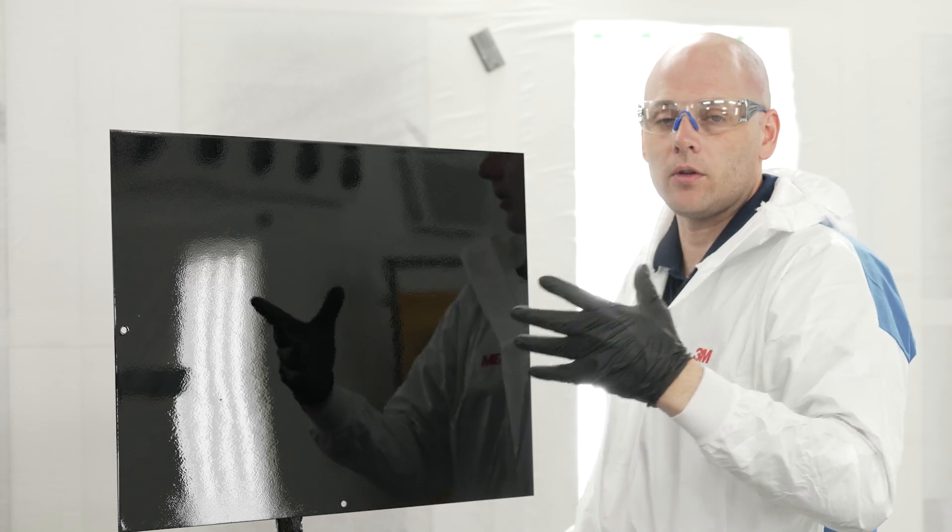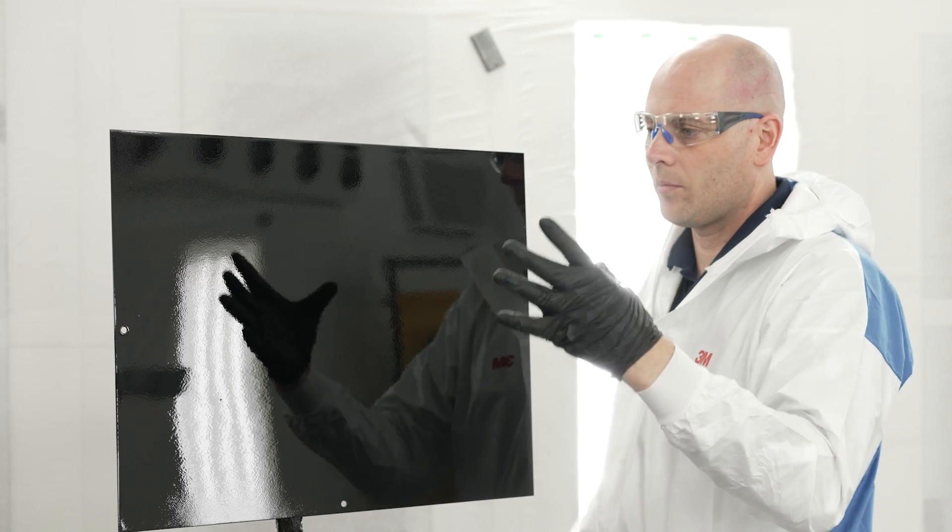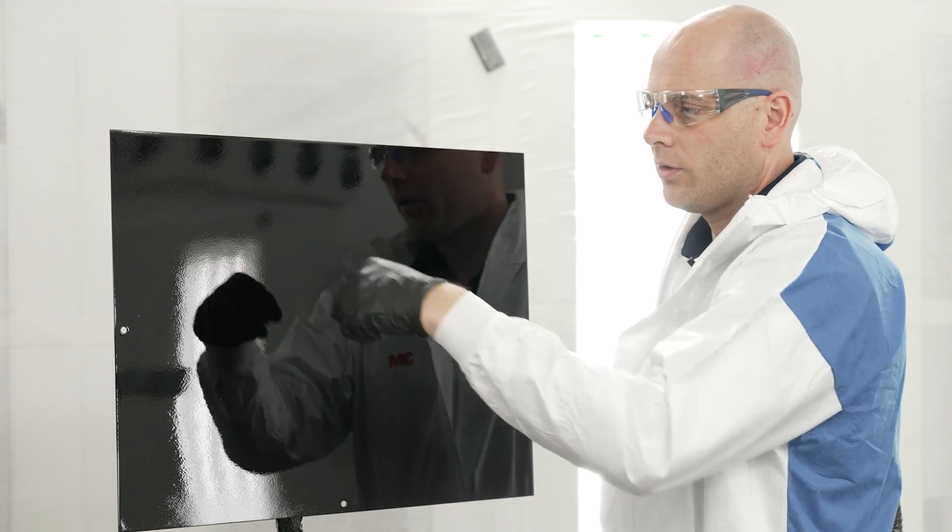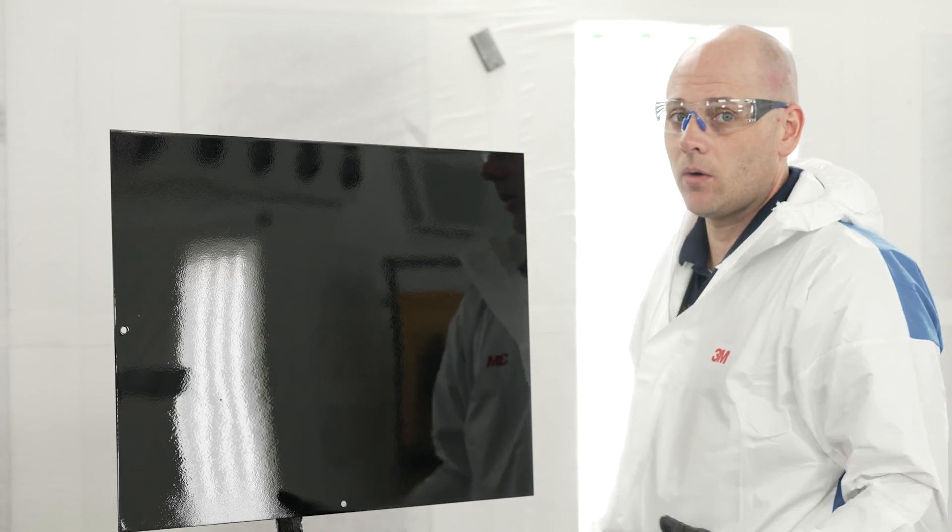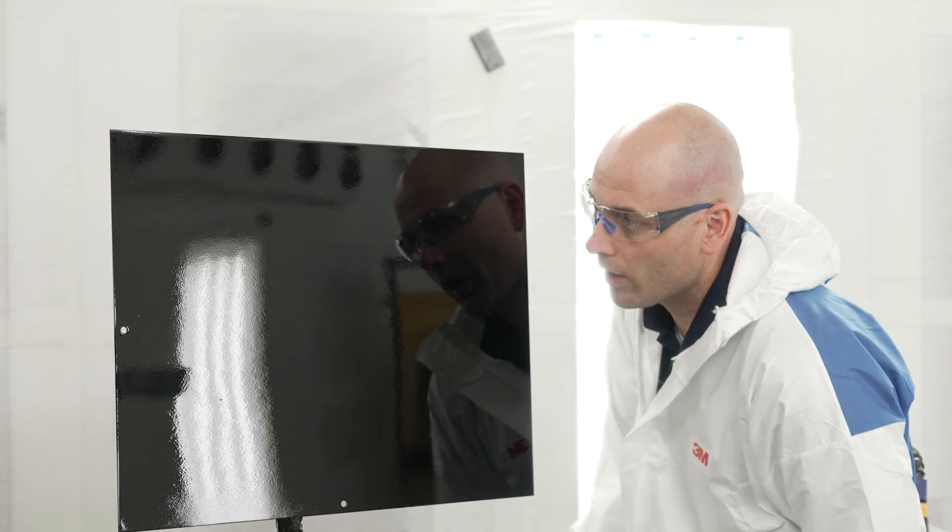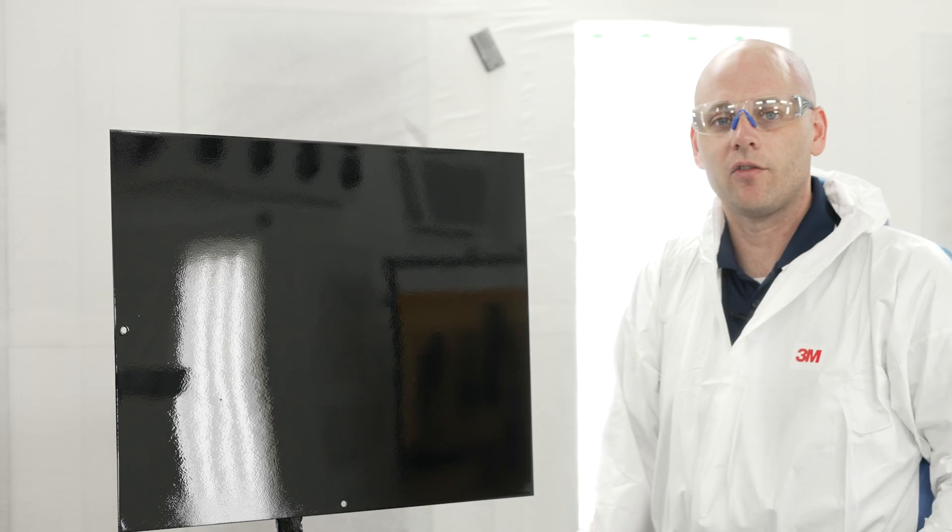And make little bumps for our next coat of clear to really grab onto and hold so the fish eyes can't push them away and make that hole develop all the way back down to the base coat. So after I did my dry spray, I did a nice medium wet coat of clear that's all now flowed out really nicely and we no longer have a fish eye issue.